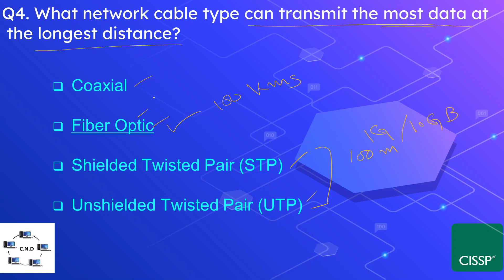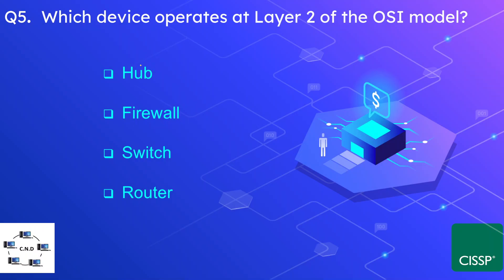Question number five: which device operates at layer two of the OSI model? The options are hub, firewall, switch, and router. The correct answer is switch. A switch operates at layer two, a hub operates at layer one, a router operates at layer three, a simple firewall can operate at layer four, and an application layer firewall can operate up to layer seven.